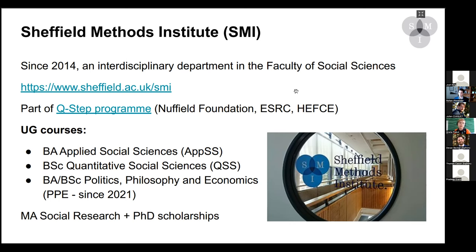At that time we created two degrees: a BA in Applied Social Sciences and a BSc in Quantitative Social Sciences, and quite recently one more course called Politics, Philosophy and Economics. There are also other kinds of training we provide in the Institute. Like any department, we have teaching and also academics doing their own research.